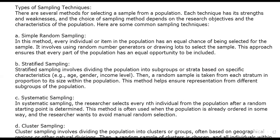Another sampling method is called stratified sampling. This type involves dividing the entire population into subgroups called strata, based on specific characteristics like age, gender, or income level. A random sample is then taken from each stratum in proportion to the size of the entire population.